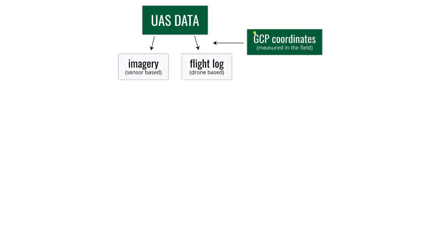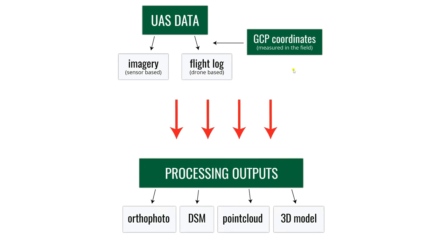To summarize: after the flight you get imagery, a flight log, and ground control coordinates. After processing, you get an orthophoto, digital surface model, point cloud, and 3D model. Now we're going to try to answer the question: how do we get there — how do we go from the raw data collected by the UAS to these processing outputs?